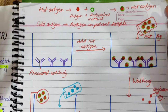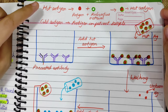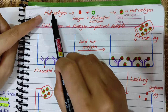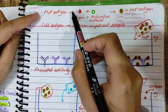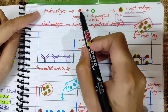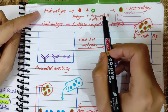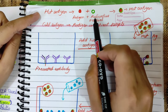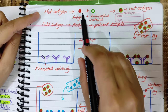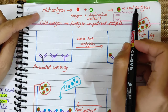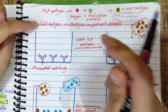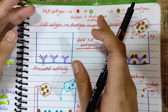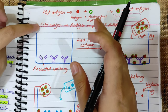RIA's principle is as follows. In this case, there are two antigens used. One is hot antigen and one is cold antigen. Hot antigen means the antigen is labeled with a radioactive material — this antigen is called hot antigen. Cold antigen is our sample antigen, which we call cold antigen. RIA is basically a competition between both antigens.